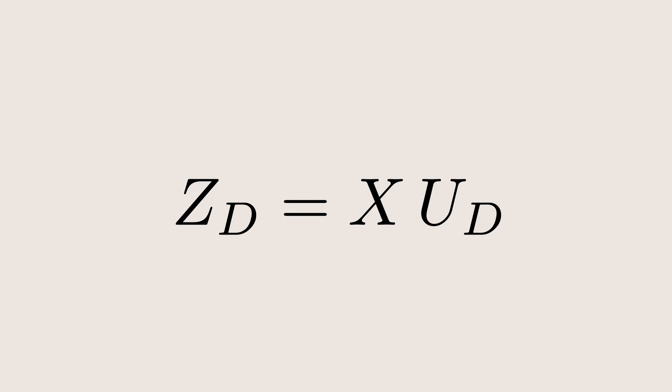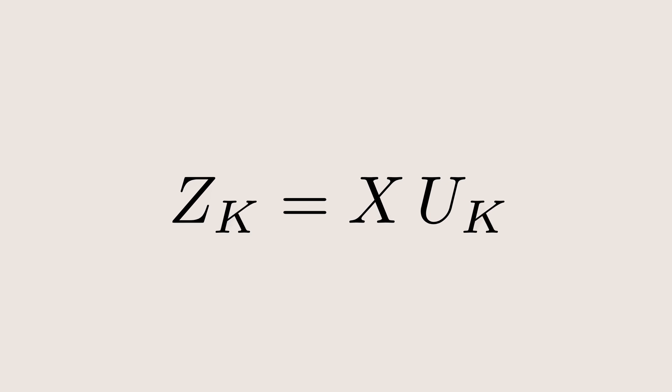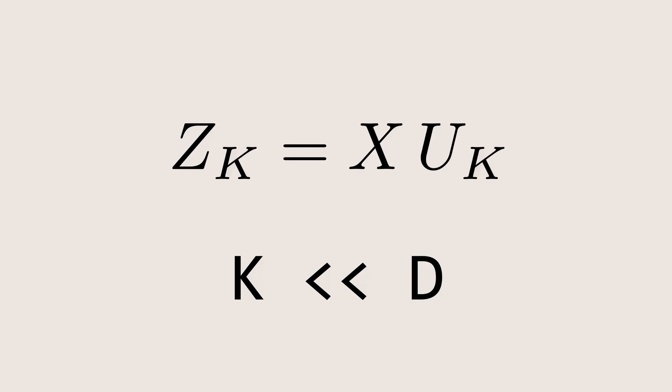Instead, we select the top k principal component factors, the ones corresponding to the largest variances, and project the dataset only onto these top k directions. This way, we reduce the dataset to k dimensions while still retaining most of the important information.